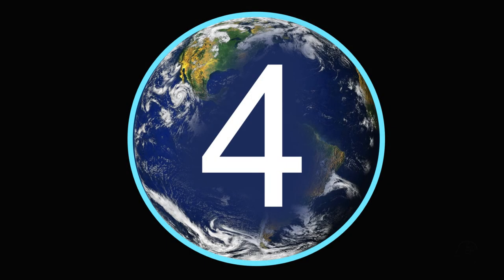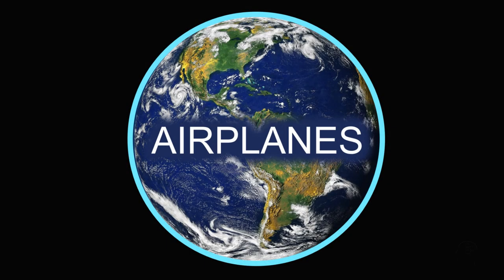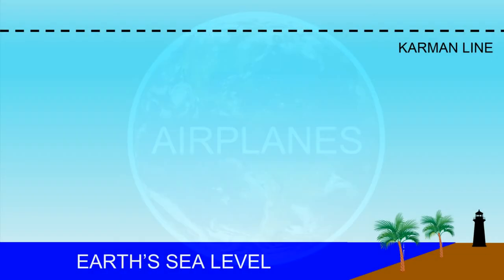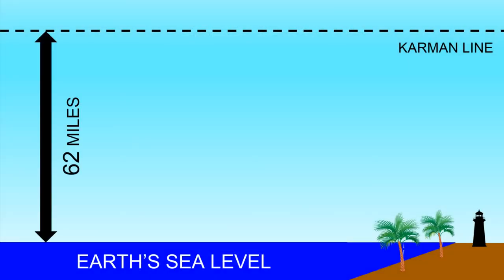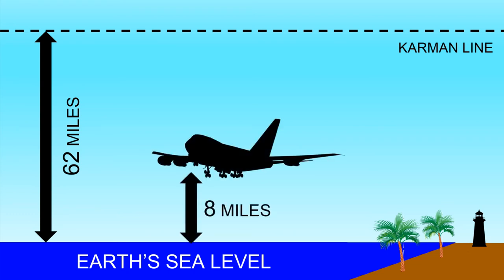And finally, fact number four. How high do airplanes fly in an atmosphere? Although the atmosphere is defined to end at the Kármán line, which is 62 miles from sea level, commercial airlines fly at a maximum height of up to 8 miles. That's because going higher than 8 miles, the atmosphere becomes too thin for planes to keep lift or stay up in the air.